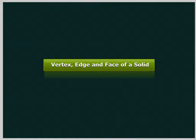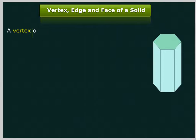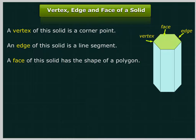Vertex, edge, and face of a solid. A vertex of this solid is a corner point. An edge of this solid is a line segment. A face of this solid has the shape of a polygon.